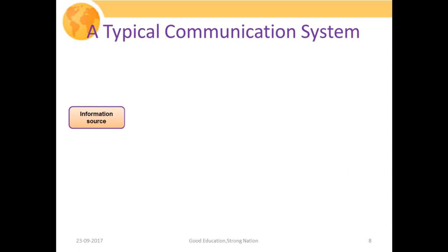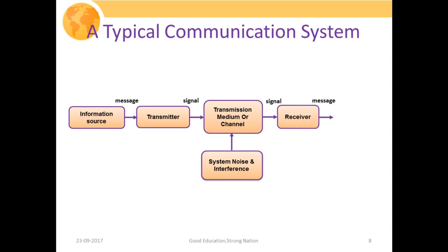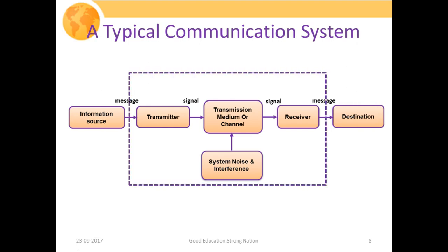Now we'll discuss a typical communication system. Initially, we have an information source whose responsibility is to generate information. That message passes through the transmitter, whose responsibility is to convert that message signal to a form that can be easily transported through the channel. The transmission medium or channel is the major source of noise — system noise or interference basically occurs at the channel. After this, the noisy signal passes through the receiver, which re-modifies the signal back to a message, and that message gets delivered to the destination.